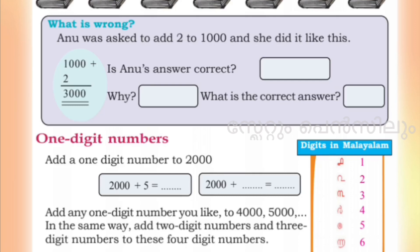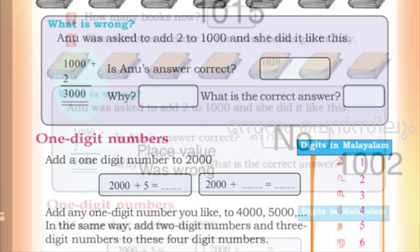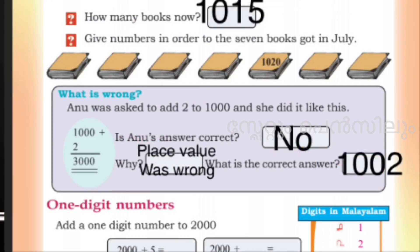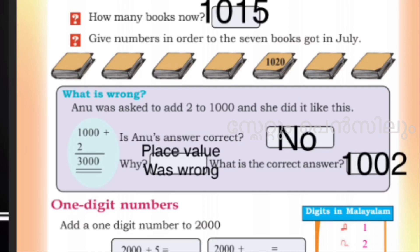The place value is 1000. Once in place value — add. You can write the text. We will write the answer.